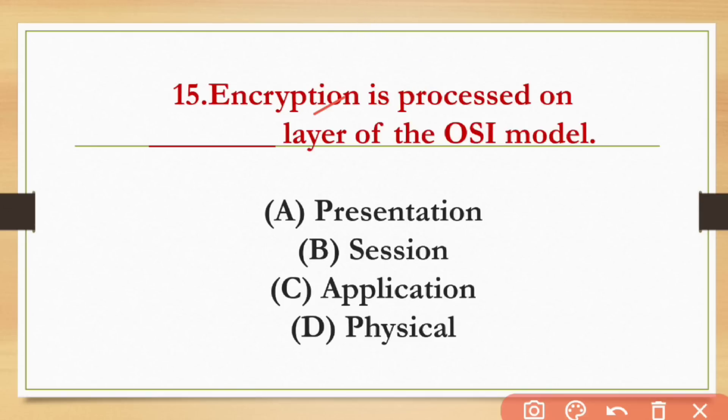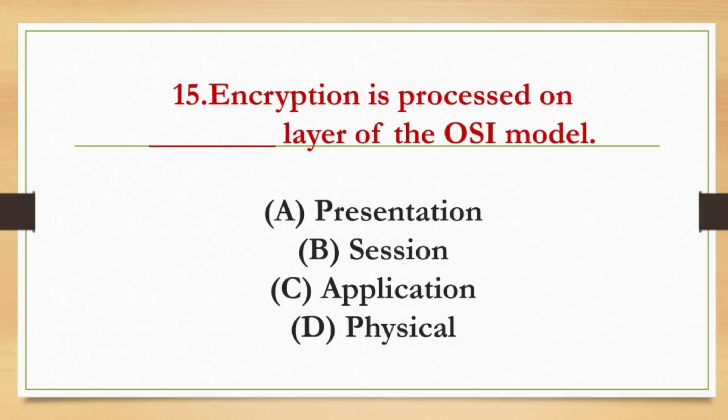Encryption is a process that occurs on which layer of the OSI model? The options are Presentation, Session, Application, and Physical. The answer is the Presentation layer.